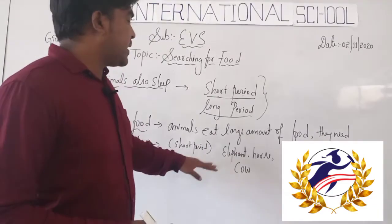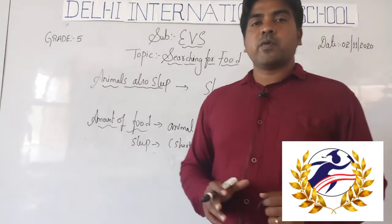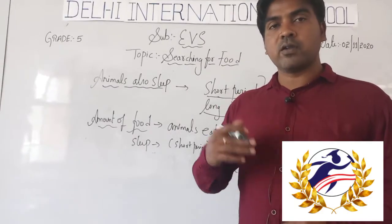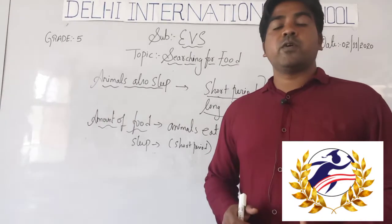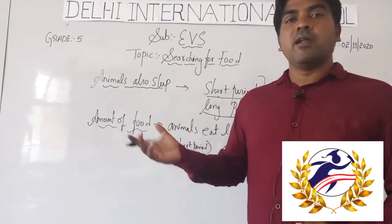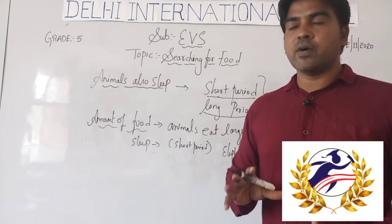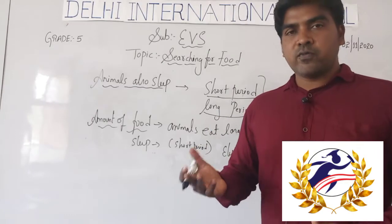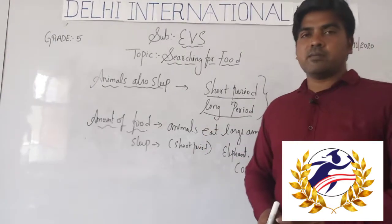Some animals such as lions, tigers, and pythons need to conserve energy, so they sleep for a longer period. For example, tigers rest for nearly 16 hours, and pythons sleep for 20 hours after having their meal. Even bats sleep for 20 hours in a day, being active for only about 5 hours. So based on the amount of food and conservation of energy, animals sleep for short or long periods.